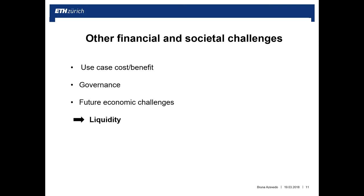It is also challenging to find budget to finance blockchain projects. Another problem is governance and regulation: we still need to determine who is in charge of the blockchain, who can permit participants, and who can determine which transactions are transparent to whom. There could also be future economic challenges — widespread automated contract tools could lead to new macroeconomic conditions, including severe liquidity issues. Liquidity is the degree to which an asset or security can be bought or sold quickly in the market without losing its price.